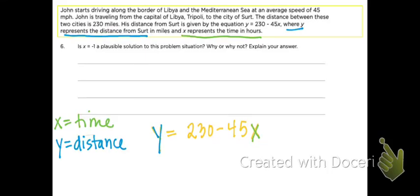This one is dealing with the same scenario, the same equation: y equals 230 minus 45x, where x is the time in hours and y is the distance from the destination. This question is simply asking: if x equals negative 1, is that plausible?